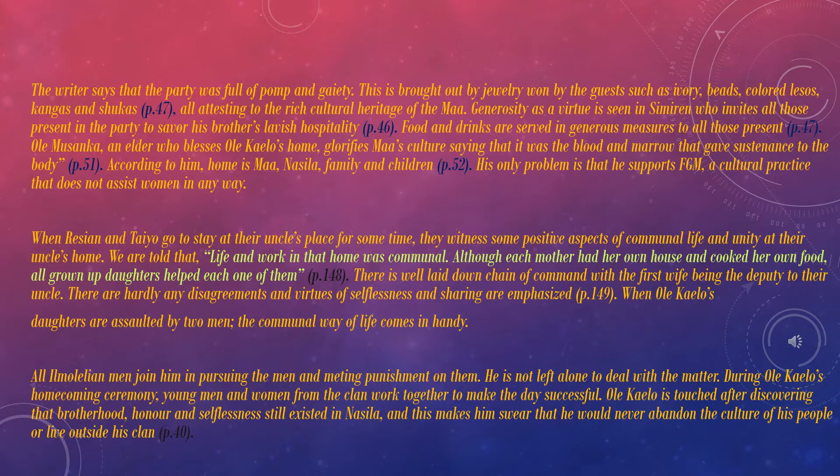Rishim and Tayo go to stay at their uncle's place for some time. They witness some positive aspects of communal life and unity at their uncle's home. We are told that life and work in that home was communal. Although each mother had her own house and cooked her own food, all grown-up daughters helped each one of them. That is on page 148. There is a well laid down chain of command, with the first wife being the deputy to the uncle. There are hardly any disagreements, and virtues of selflessness and sharing are emphasized. That is on page 149.